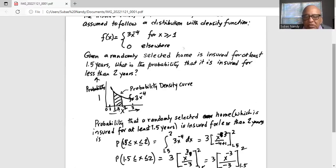So that will be integration between 1.5 to 2, 3x to the power of minus 4 dx, which is after we do the integration 3x minus 3 and then minus 4 plus 1 in the denominator and the limits of integration are from 1.5 to 2.